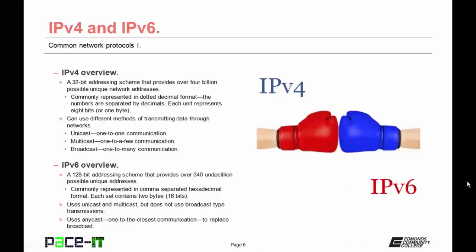IPv4 can use different methods of transmitting data: unicast, which is one-to-one communication; multicast, which is one-to-a-few communication; or broadcast transmissions, which is one-to-many communication. IPv6, on the other hand, is a 128-bit addressing scheme that provides over 340 undecillion possible unique addresses. It's commonly represented in a colon-separated hexadecimal format, where each set contains 2 bytes equal to 16 bits.